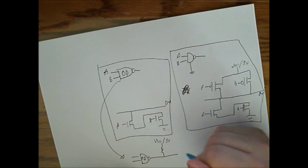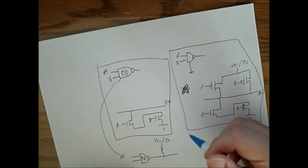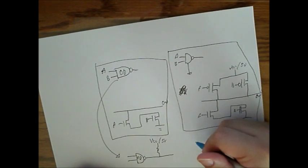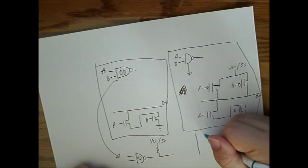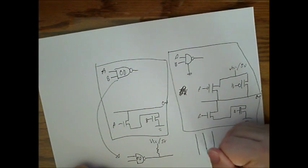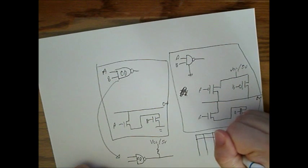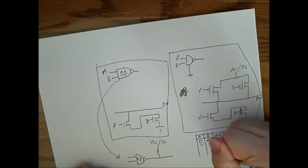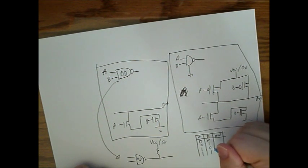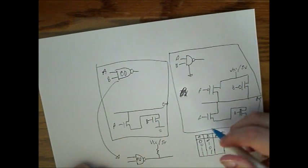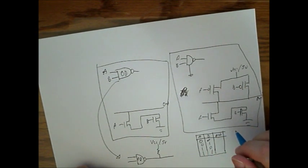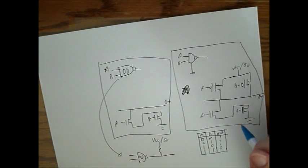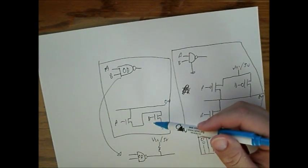So I'll basically describe how the output is affected by the inputs of the open drain. So let's draw a truth table. So our predicted results from a typical NAND gate is 1, 1, 1, 0. So now let's confirm this.